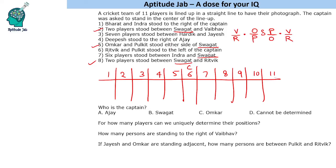Now, there are six players between Indra and Swagat, so Indra will come to one side. If Indra is on the left, counting six players from Swagat would place Indra at the leftmost position. However, it is given that Bharat and Indra stood to the right of the captain, so Indra cannot be on the left side — Indra has to be on the right side.